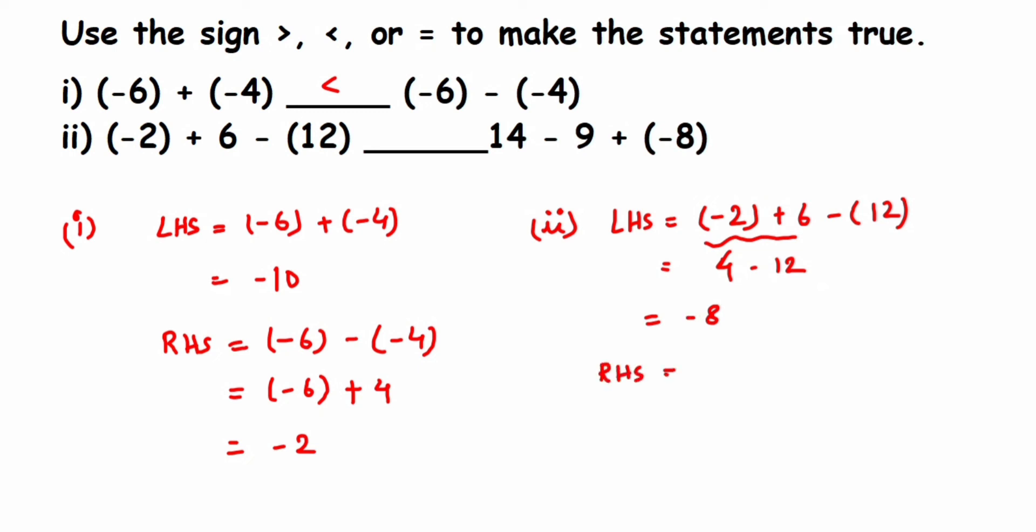We have 14 - 9 + (-8). So 14 minus 9 will give us 5, then plus (-8). So you can see 5 + (-8) will be nothing but 5 - 8. Subtract them: it's like (+5) - 8. Plus minus is minus. When you subtract this, we'll get 8 minus 5 is 3, but 8 is the greater number with a negative sign, so we'll get (-3).